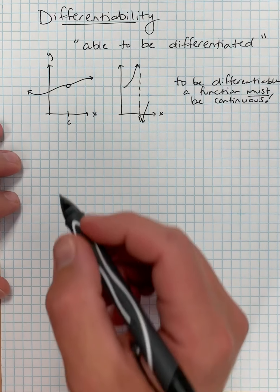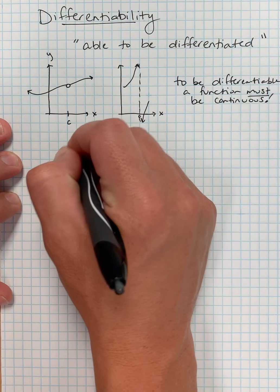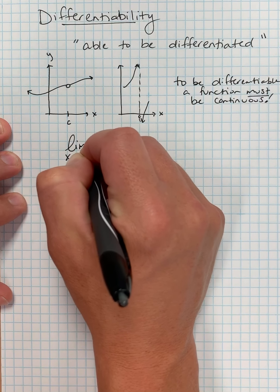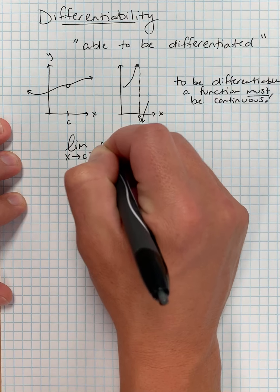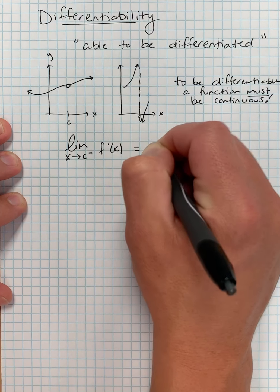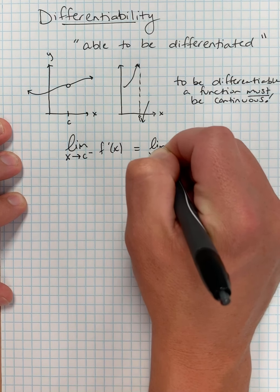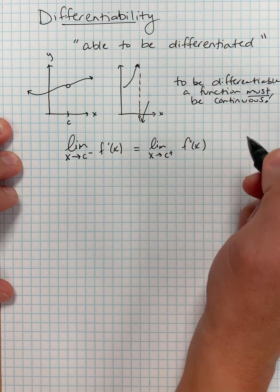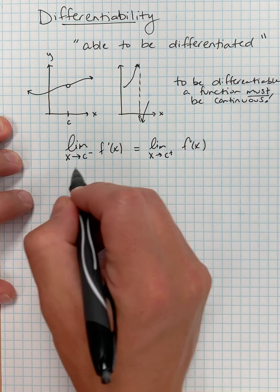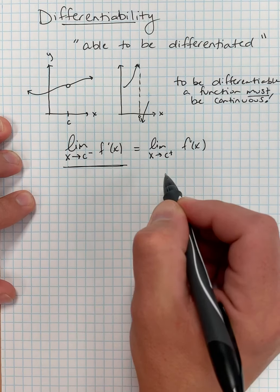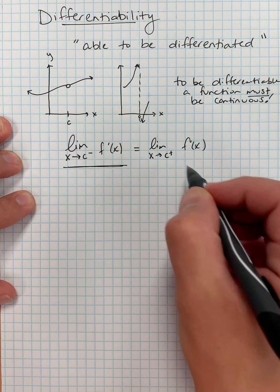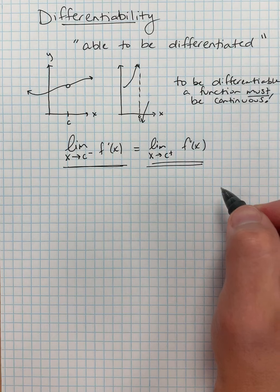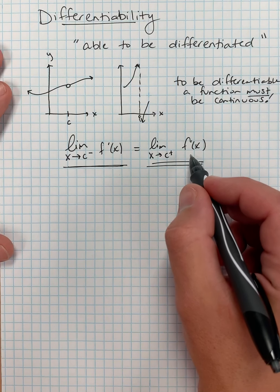What makes a function differentiable? Specifically, the limit as x approaches c from the left of f prime of x must equal the limit as x approaches c from the right of f prime of x. In other words, the limit of the derivative from the left must equal the limit of the derivative from the right at that same x value.